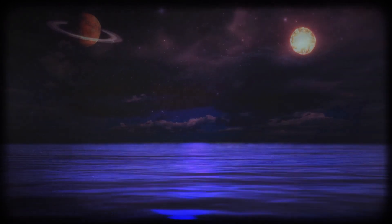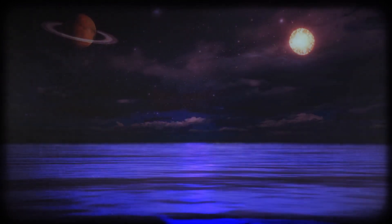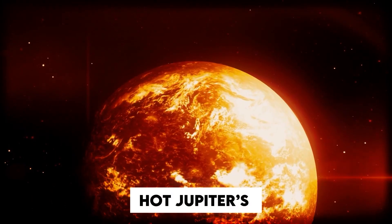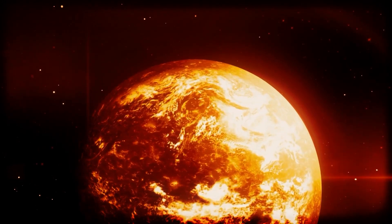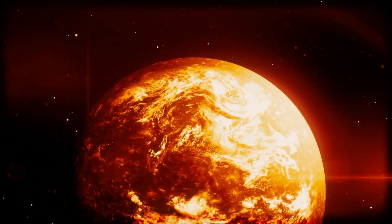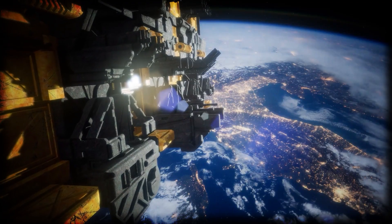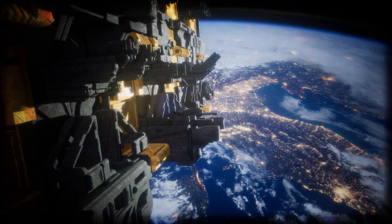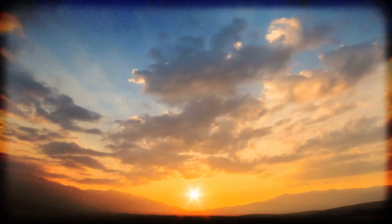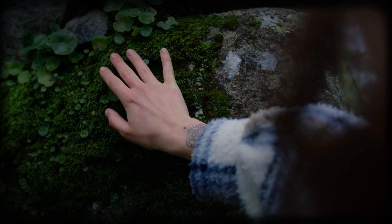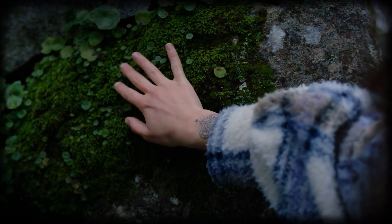Of course, Kepler didn't just look for life-friendly worlds. It uncovered a whole universe of strange planets. Some are hot Jupiters, massive gas giants made mostly of hydrogen and helium that orbit extremely close to their stars, whipping around them in just days. They're way too hot and wild for life, but they're fascinating in their own right.